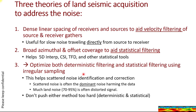Scattered noise is often the dominant noise harming the data. And much land scattered noise is actually distorted signal, and we treat it as noise. But the interesting thing is if we can convert that distorted signal back to normal signal, even partially, that's a big win.